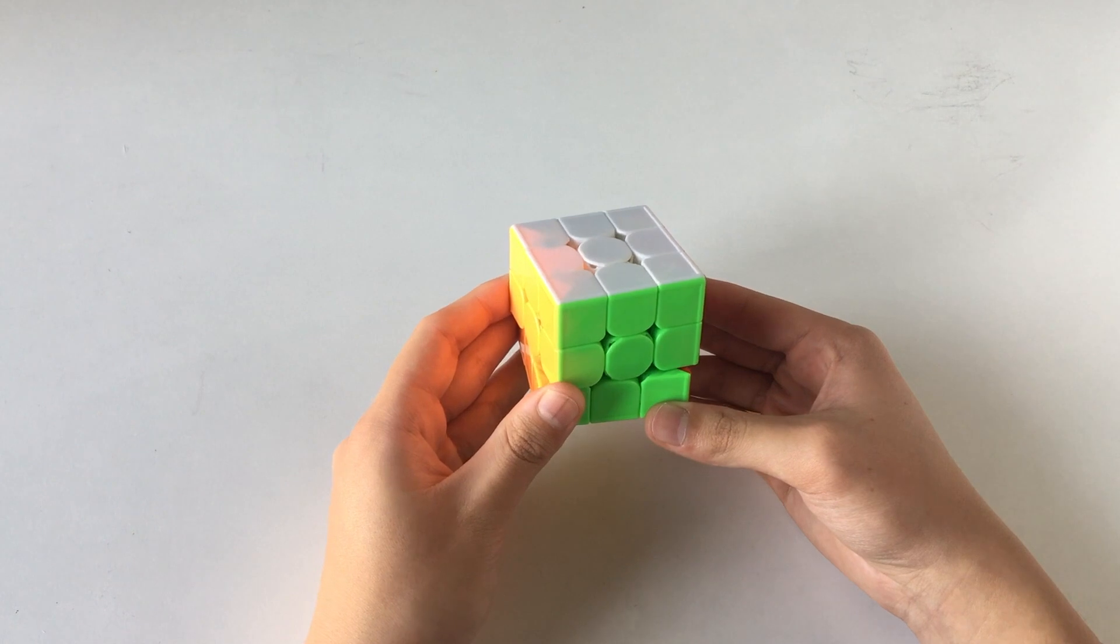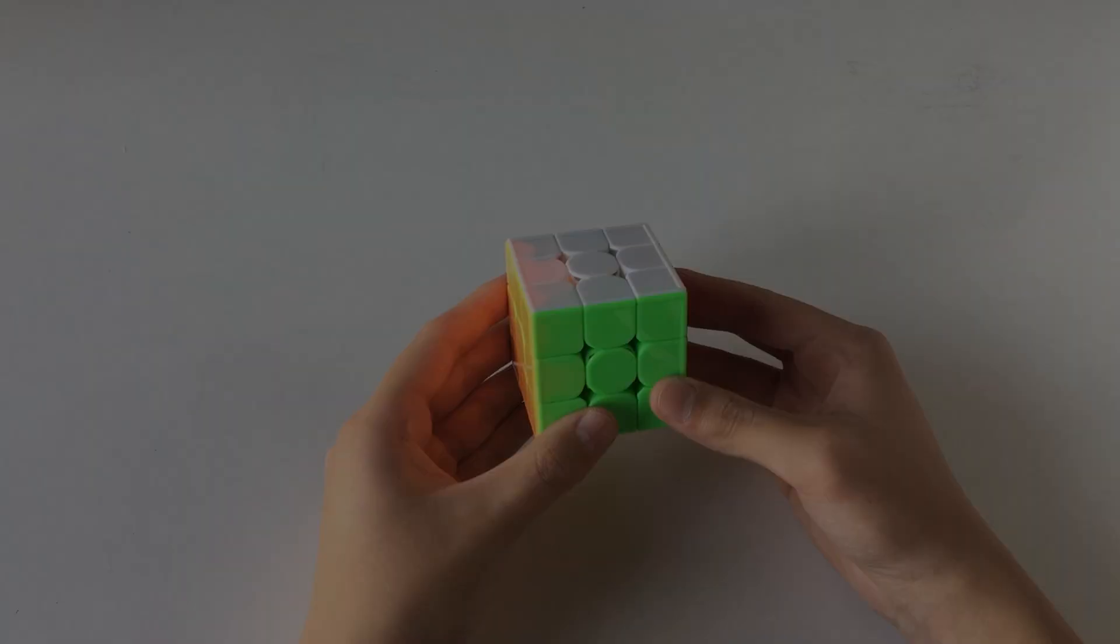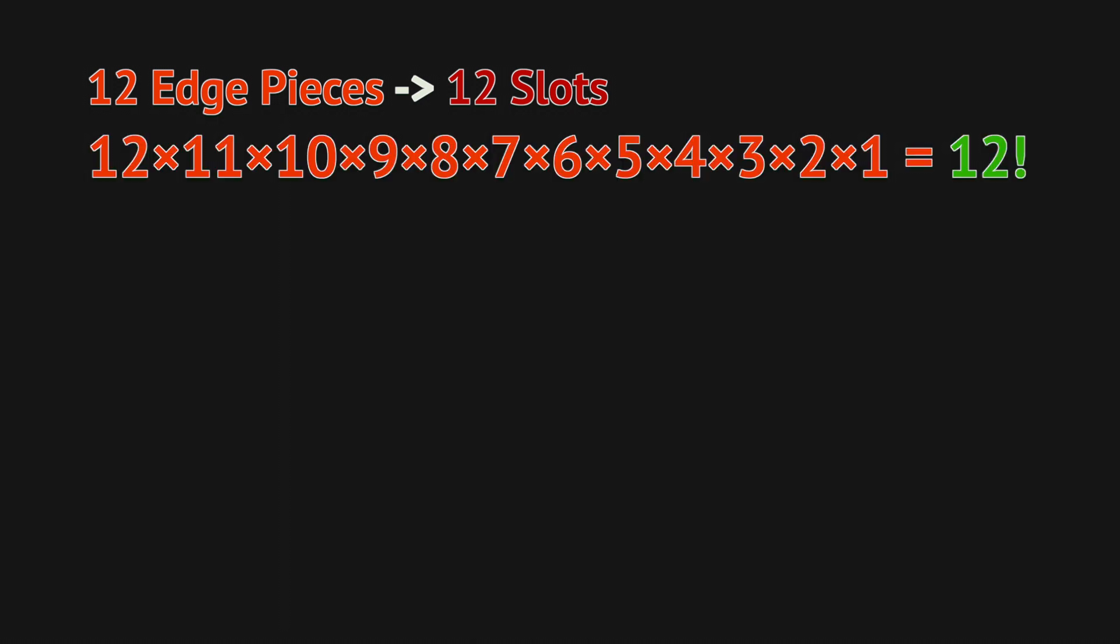So first, let's calculate the number of different combinations of edges you could have. There are 12 edges around the Rubik's cube. Since every edge can go into any of these 12 slots, it means that to calculate the number of different combinations that the edges could have, it would be 12 factorial.